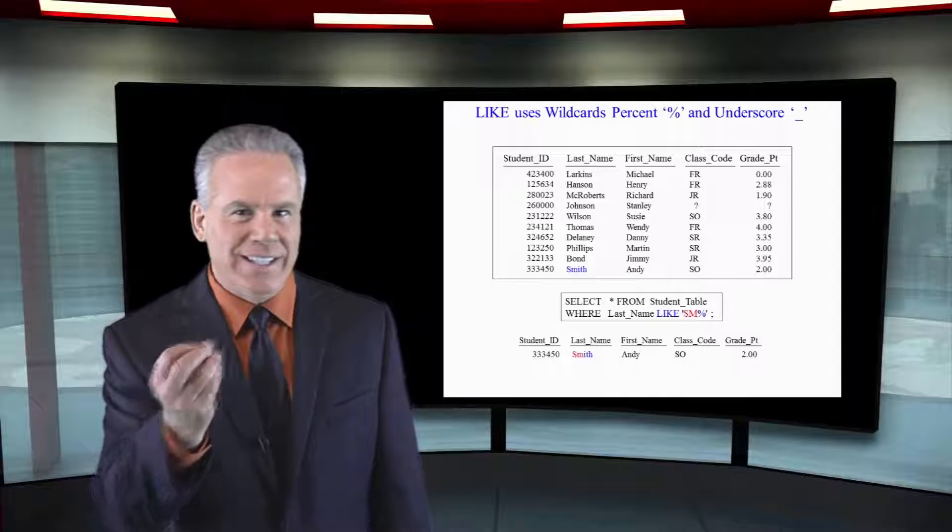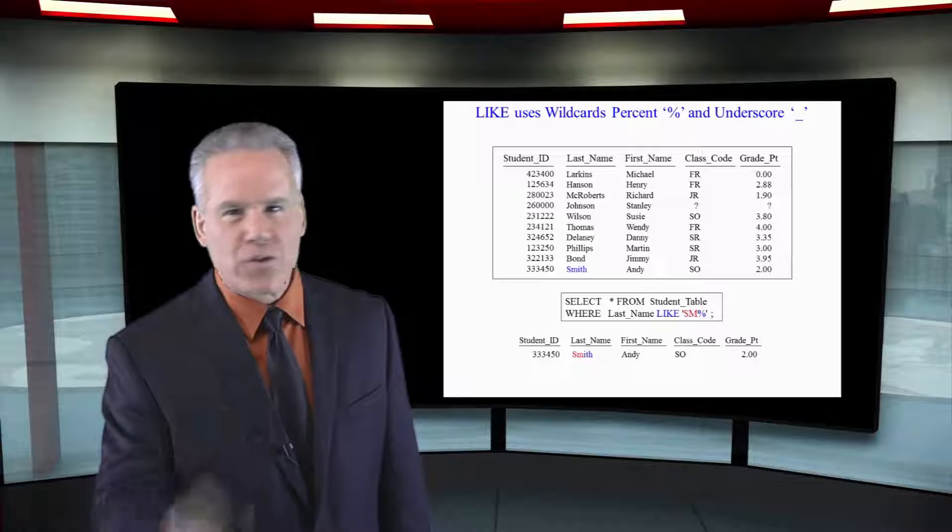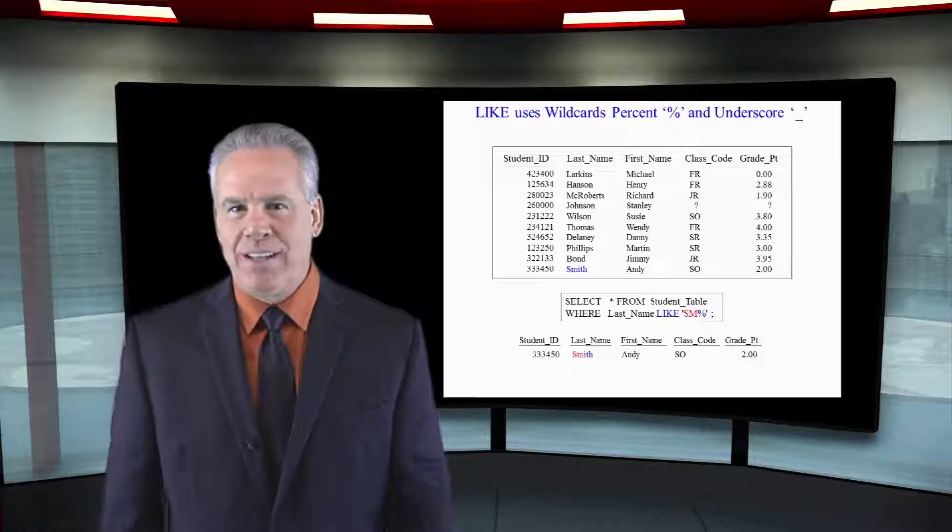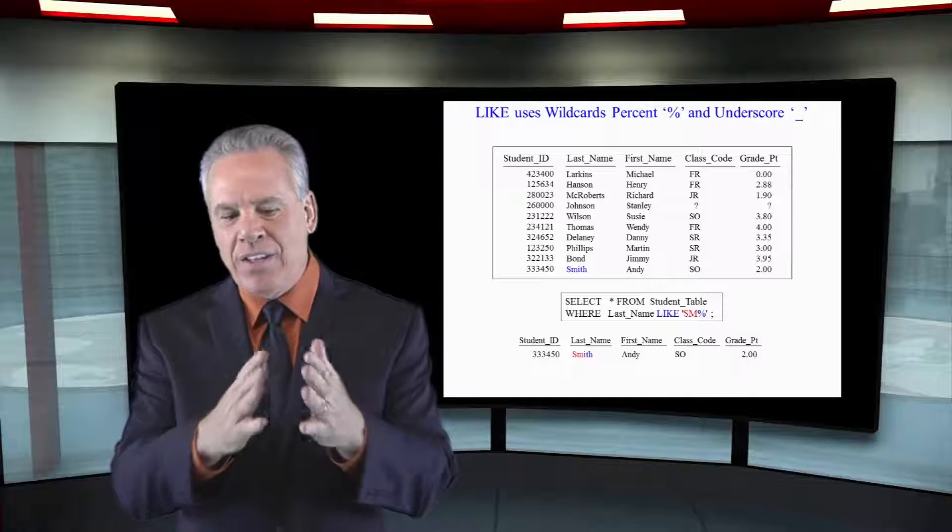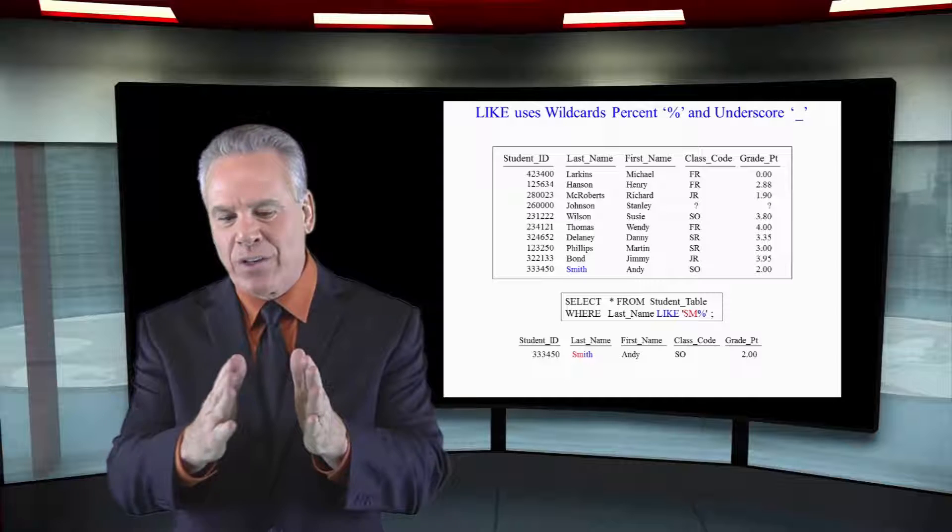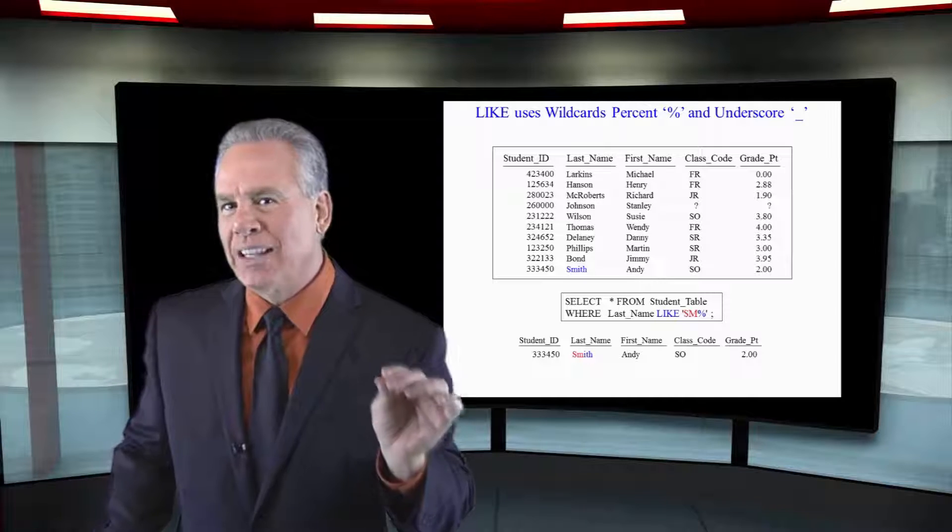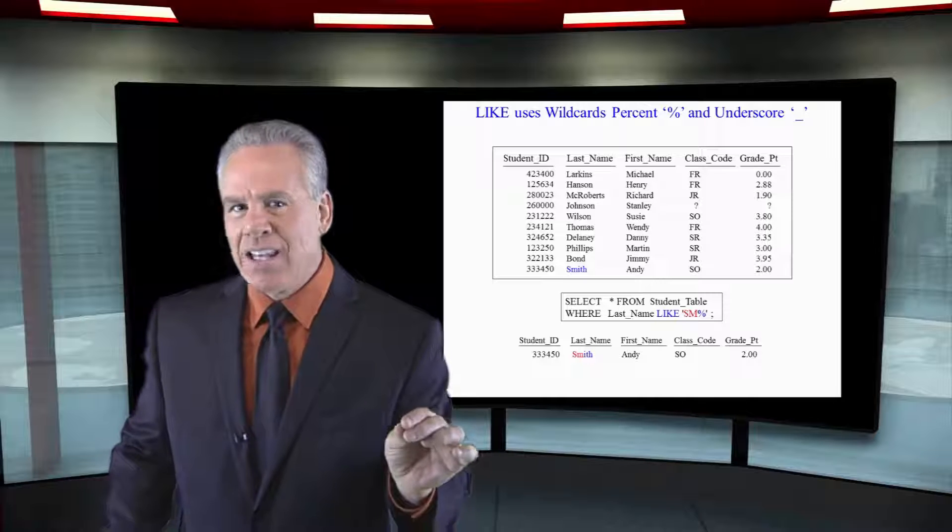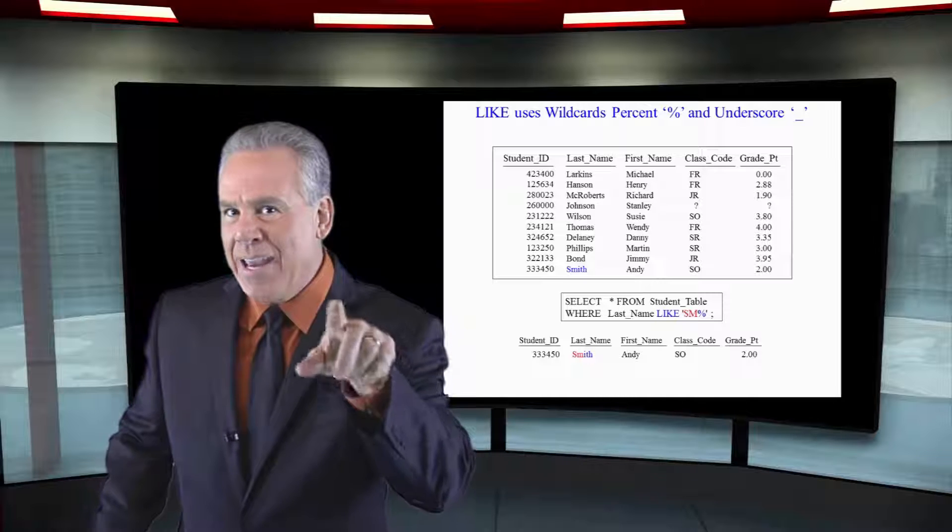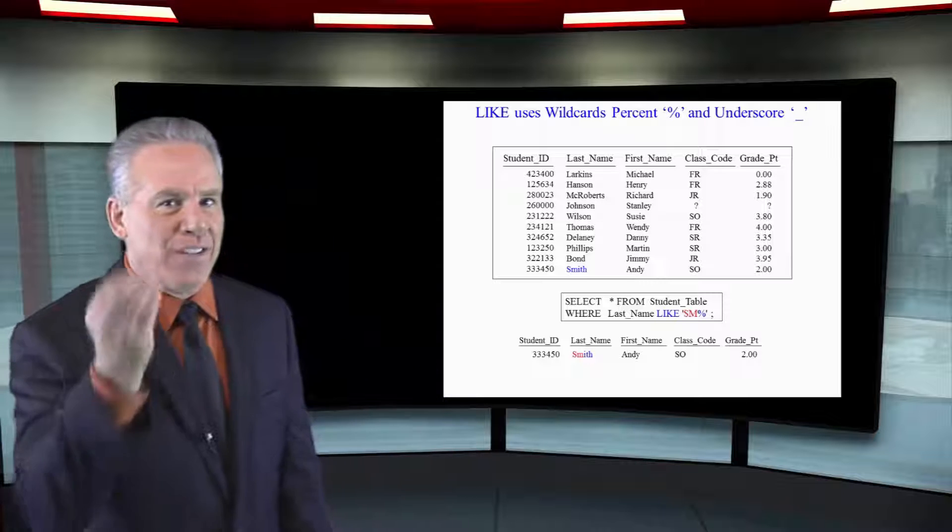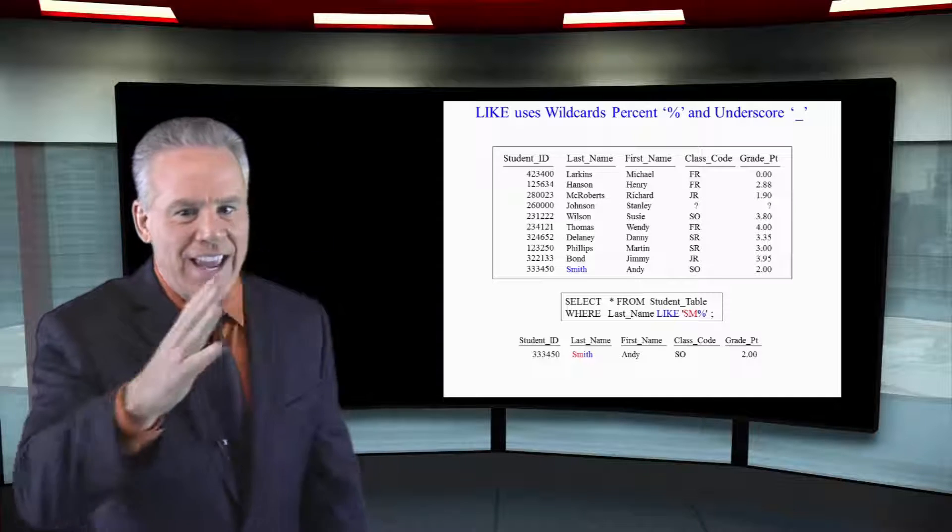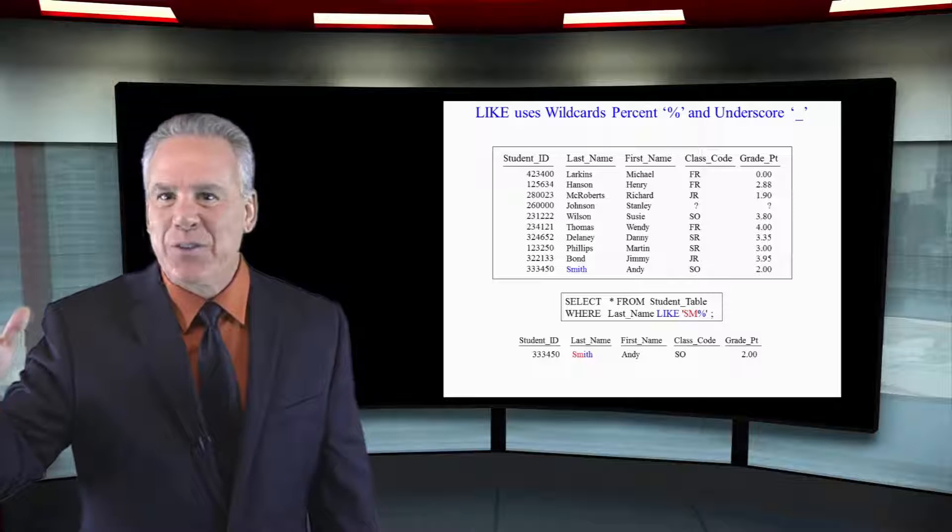Sometimes you'll see in a police detective show, I got the first three letters of their license plate. Well, that is the LIKE command. It doesn't have to equal the entire license plate. You can use the LIKE command to say LIKE A, B, C, PERCENTAGE. And now if it started with A, B, C and then anything after that, it's going to bring the row back.